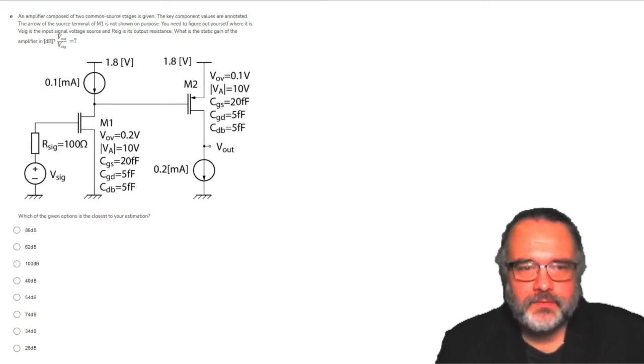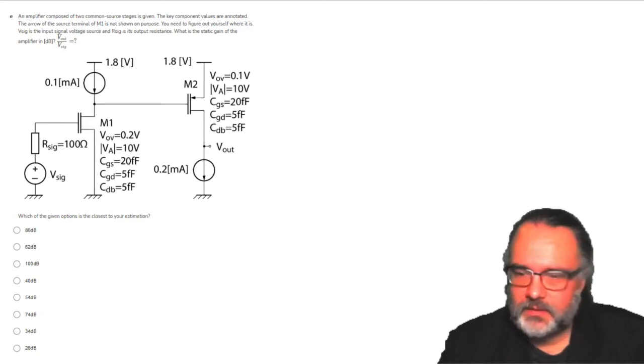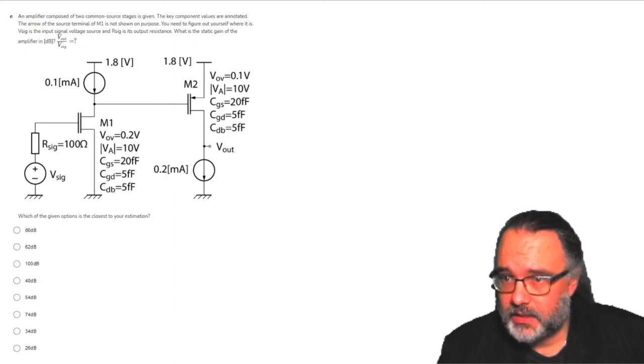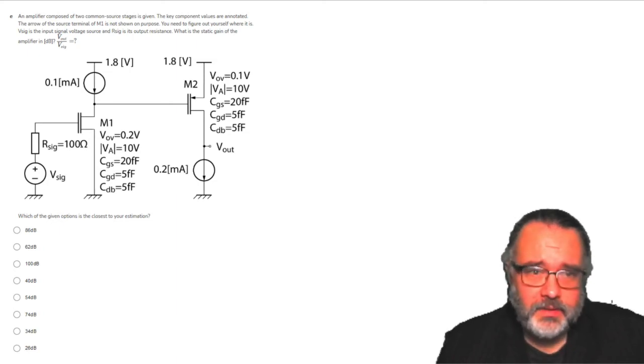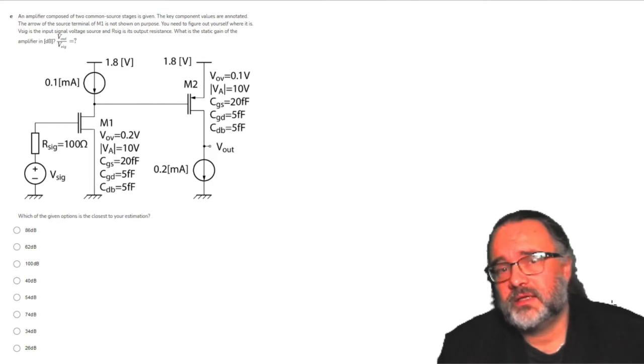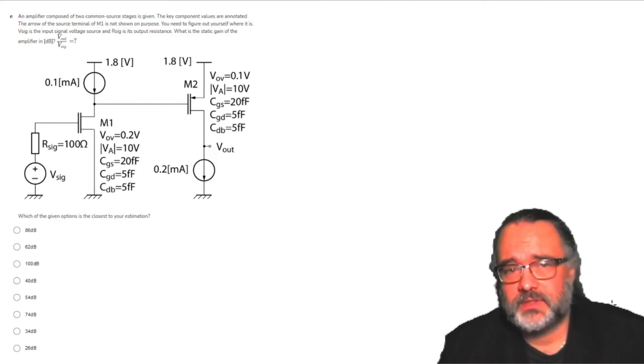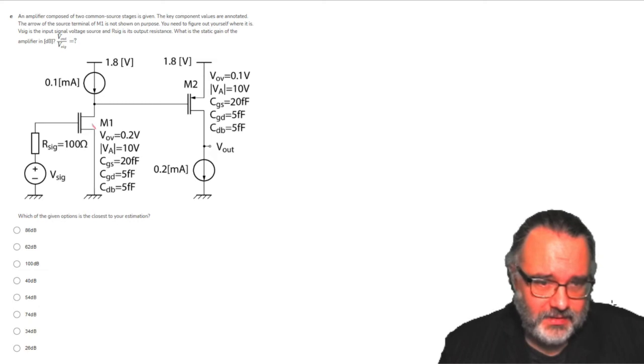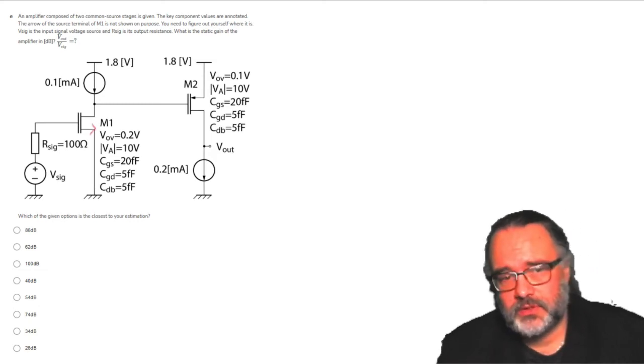An amplifier composed of two common source stages is given. The key component values are annotated. The arrow of the source terminal of transistor M1 is not shown on purpose. You need to figure out where it is. It's very easy, and in my previous videos you can find out why exactly. But it is given that it is a common source stage, so we have to take the output from the drain since the input is at the gate. Hence this must be the source connected to ground.